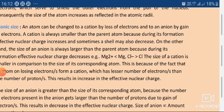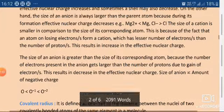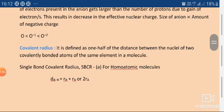The next type is covalent radius. The covalent radius is defined as half of the distance between the nuclei of two covalently bonded atoms of the same element in a molecule. Consider homonuclear molecules such as H₂ or Cl₂. The bond between them is covalent, and half of the distance between the two atoms in H₂ or Cl₂ is the covalent radius.